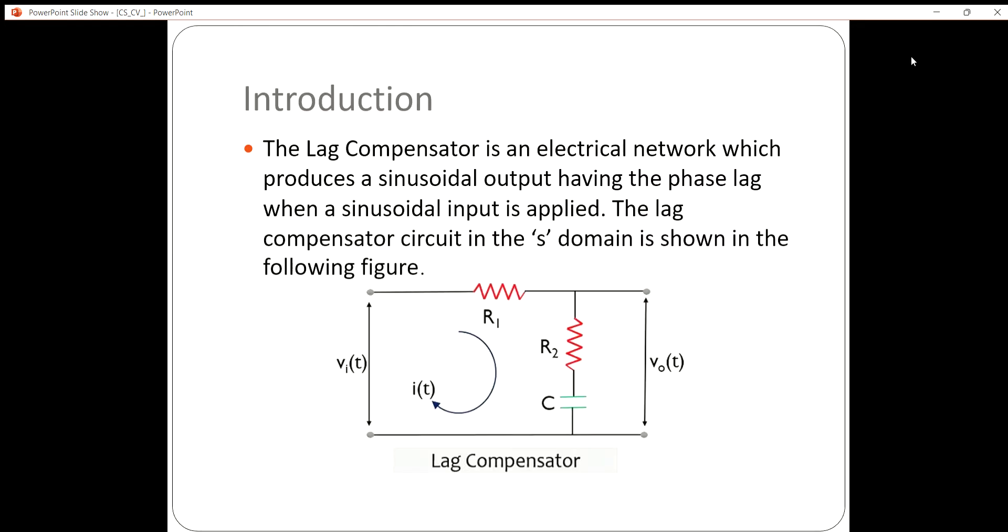Coming to the definition, the lag compensator is an electrical network which produces a sinusoidal output having the phase lag when a sinusoidal input is applied. The lag compensator circuit in the s-domain is shown in the following figure.